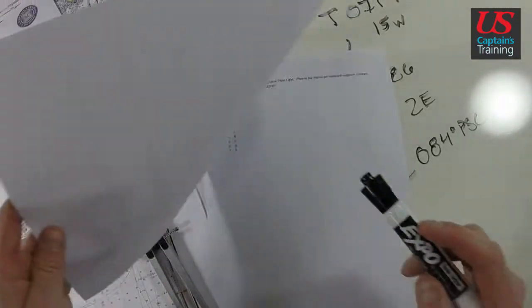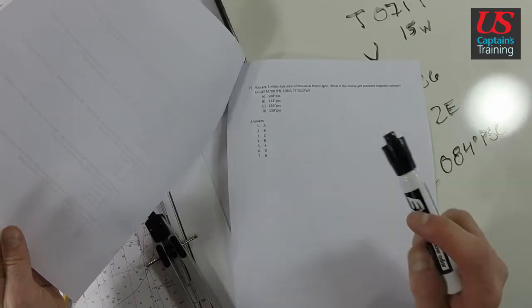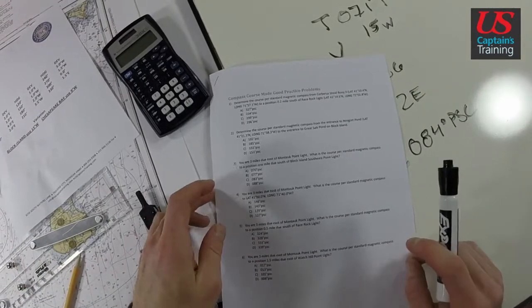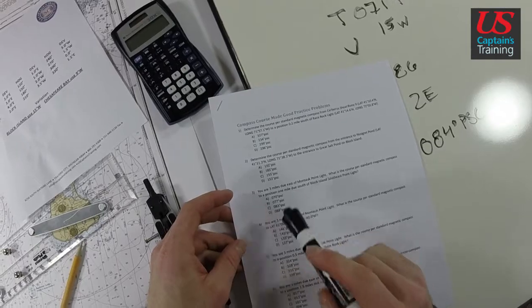Let's see. 3, C. 3 is C. So that is the answer to compass course made good practice problem 3.